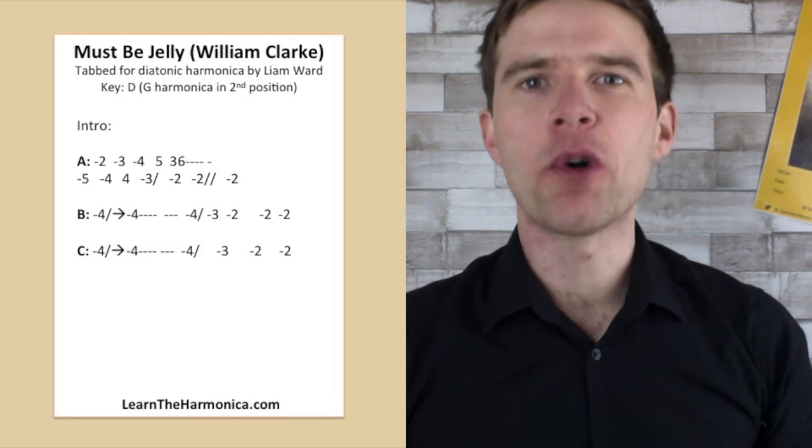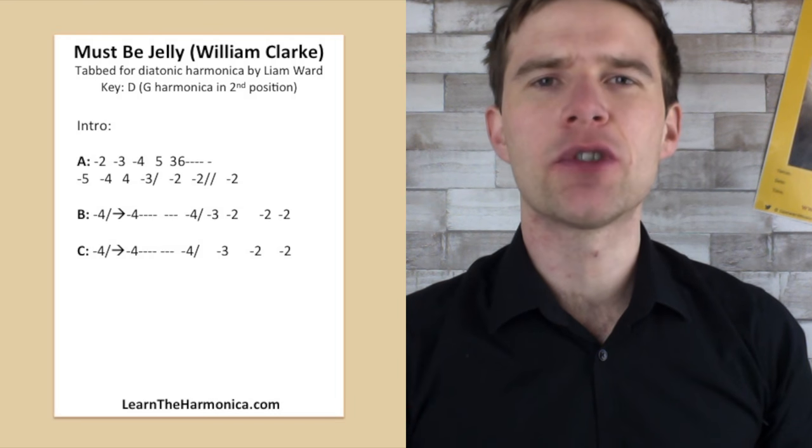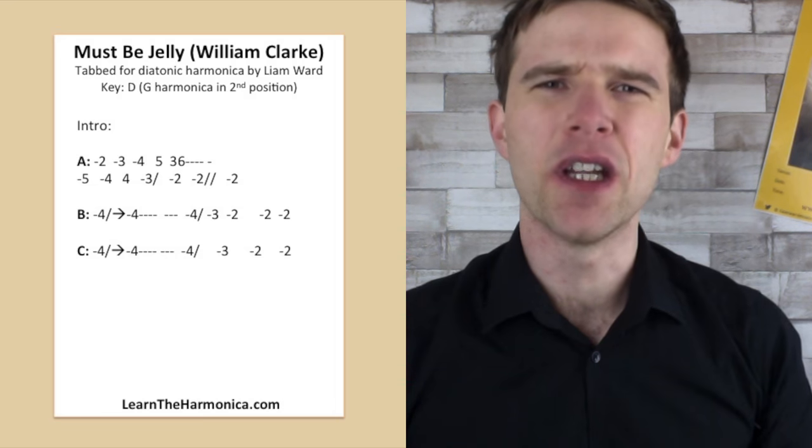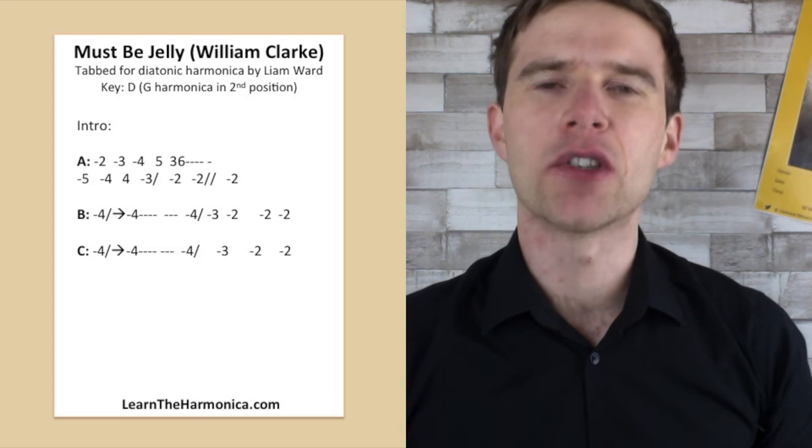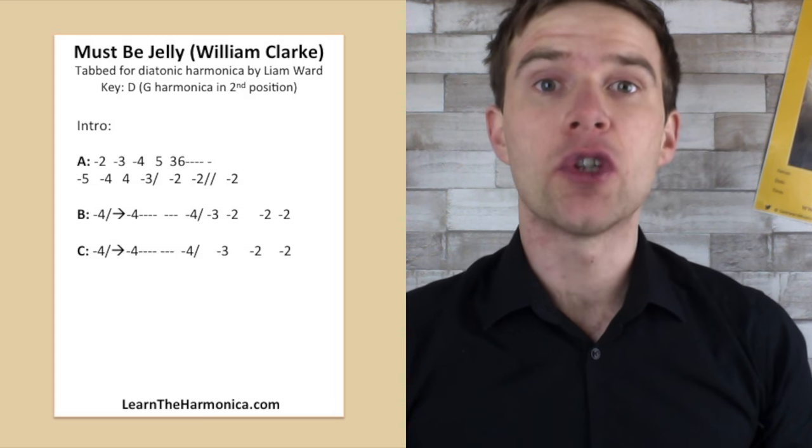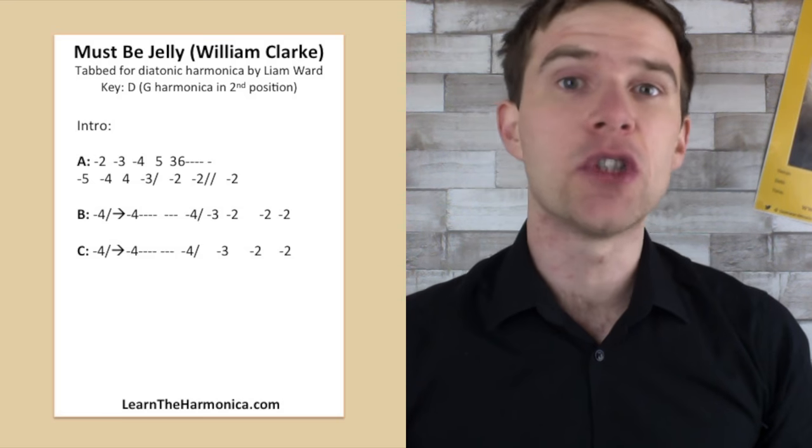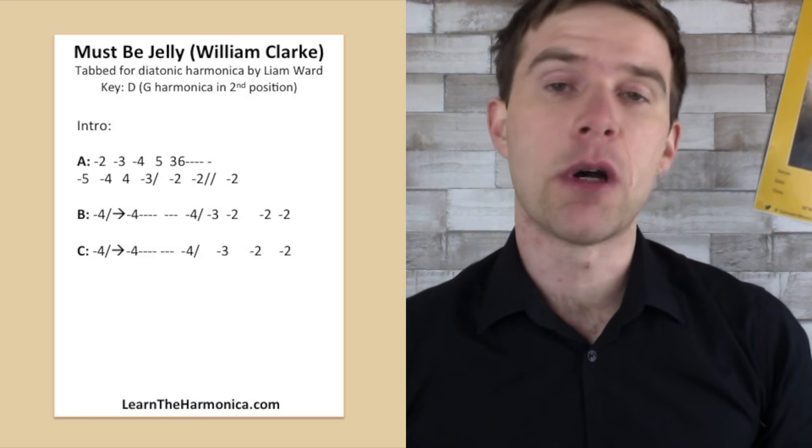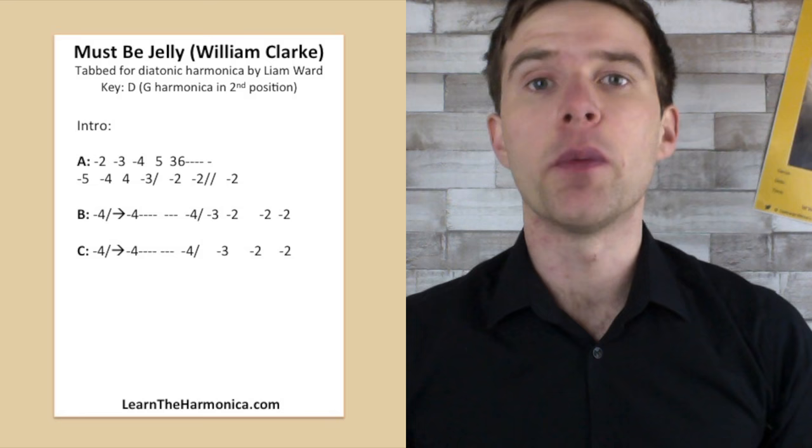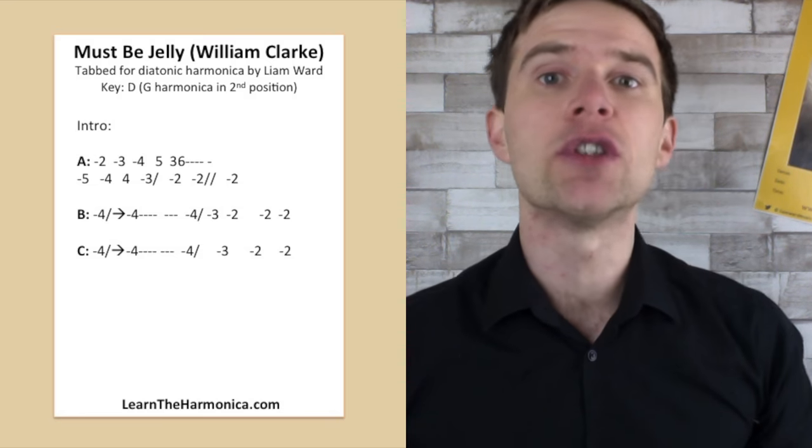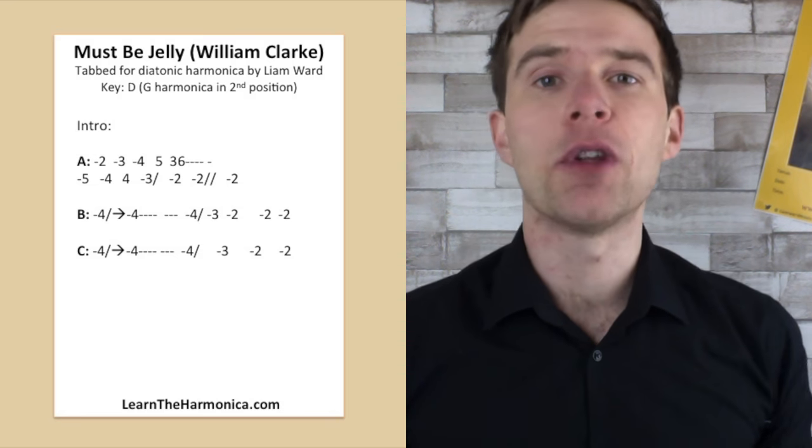So this lesson's a little bit off the cuff. I was planning something entirely different and then I was just listening to some William Clark and thinking, you know what, I want to teach you some William Clark. So this is a nice little intro to the classic song Must Be Jelly. It's on a G harmonica. The song's in the key of D, so we're playing in second position, but if that means nothing to you, don't worry, just follow the tab on the screen.